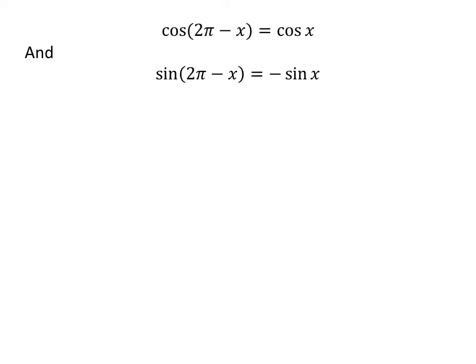We also know cosine of 2 times pi minus x is equal to cosine of x, and sine of 2 times pi minus x is equal to minus sine of x.